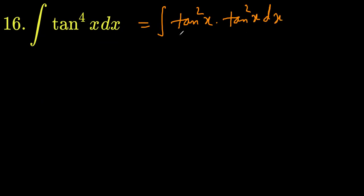Now we would like to change one of these tan into sec. So it would look like tan squared x as it is, tan squared x as it is, times sec squared x minus 1 and dx.